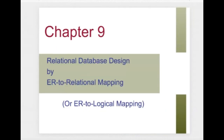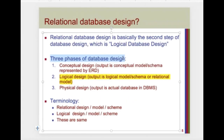We are starting our next chapter: relational database design by ER to relational mapping. In the last chapter we saw the relational model. Now, remember that we had three phases of database design: number one, conceptual design; number two, logical design; number three, physical design.